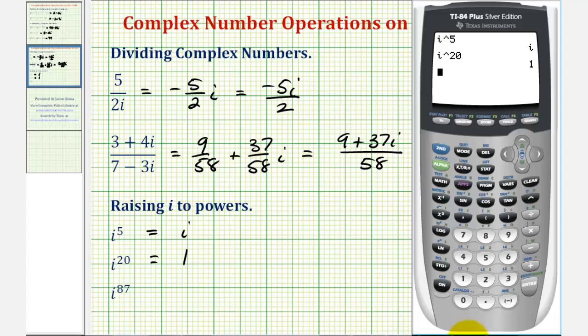And now for this last example, we'll have second i raised to the power of eighty-seven, and enter. Now notice how the real part of the complex number, or a, is equal to three point seven times ten to the negative twelfth. This is really not the value of a. The calculator is having a problem determining a. Notice how this would be a very, very small number, and it's actually zero, because we know, when we raise i to a power, it's either i, negative i, one, or negative one. So we can disregard this first part, and i to the eighty-seventh power is equal to negative i.